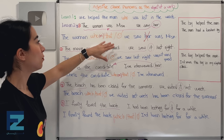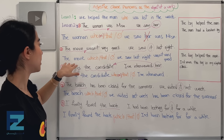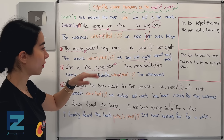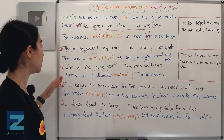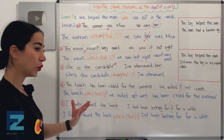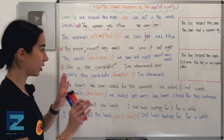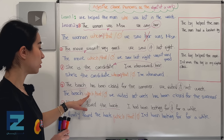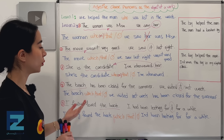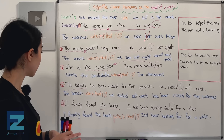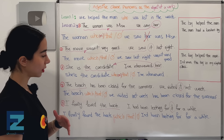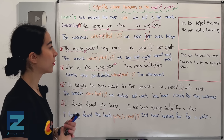Let's summarize: the woman whom or who we saw was Misa. The movie — which, that, or nothing — we saw last night wasn't very good. She is the candidate — whom, that, who, or nothing — I've interviewed. The beach — which, that, or nothing — we visited last week has been closed for the summer. I finally found the book — which, that, or nothing — I'd been looking for, for a while.